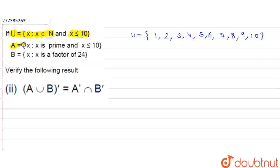Now, what is set A given? A is equal to {x: x is prime and x ≤ 10}. So set A is prime numbers, where x is less than or equal to 10.